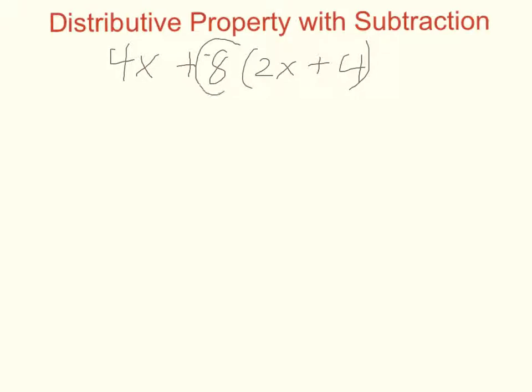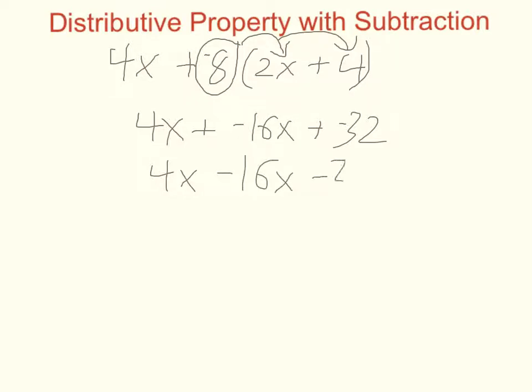We're essentially taking, in this case, a negative 8, multiplying it by the 2x, and then multiplying it by 4. So in this case, we get negative 16x and negative 32, which, of course, we can just write as 4x minus 16x and minus 32.